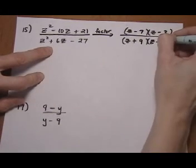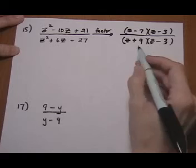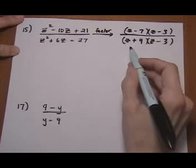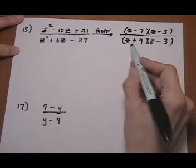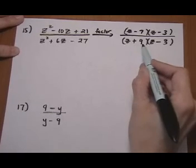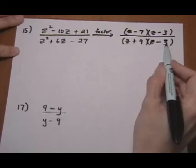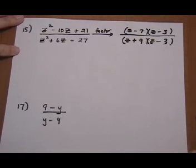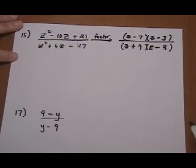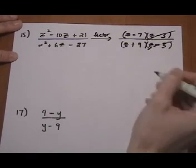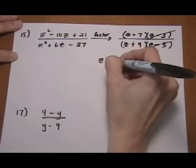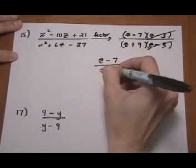So the factors of 27, 9 and 3 have a difference of 6. We want to put the 9 with the plus because we want to end up with a positive 6. And then just mentally check your factoring when you're doing these. Z squared minus 3 plus 9 is plus 6z minus 27. So that worked. Now we can go to the canceling step. Z minus 3 common factors. So our answer is z minus 7 over z plus 9.